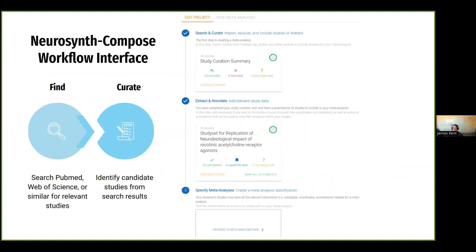So on the right here is a screenshot of what it will look like when you've created the project and have added some studies. And the first step here that we see on the check mark is search and curate. So that'll be import, exclude, and include studies of interest. So that will be covering the first two steps in Katie's diagram.